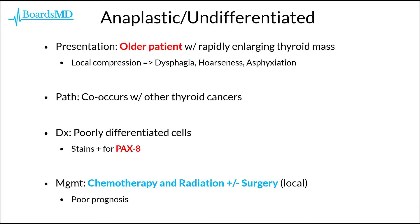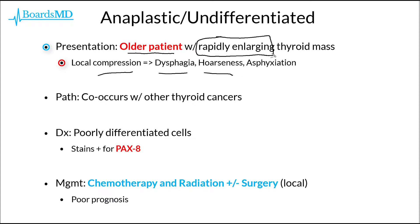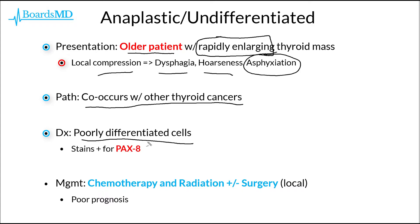While papillary, follicular, and medullary carcinomas of the thyroid have been slower growing in nature and have portended a good prognosis, anaplastic or undifferentiated carcinoma of the thyroid is not going to follow this trend. Patients with anaplastic carcinoma classically will be an older patient who presents with a rapidly enlarging thyroid mass. Because this mass is so rapidly enlarging, this can lead to compression of local structures, leading to dysphagia, hoarseness, and even asphyxiation. Anaplastic carcinomas tend to co-occur with other thyroid cancers. Histopathologically, we are going to see poorly differentiated cells, which classically will stain positive for PAX-8. In terms of management, anaplastic carcinoma of the thyroid requires chemotherapy and radiation, and in some cases local surgery, but overall the prognosis is extremely poor.